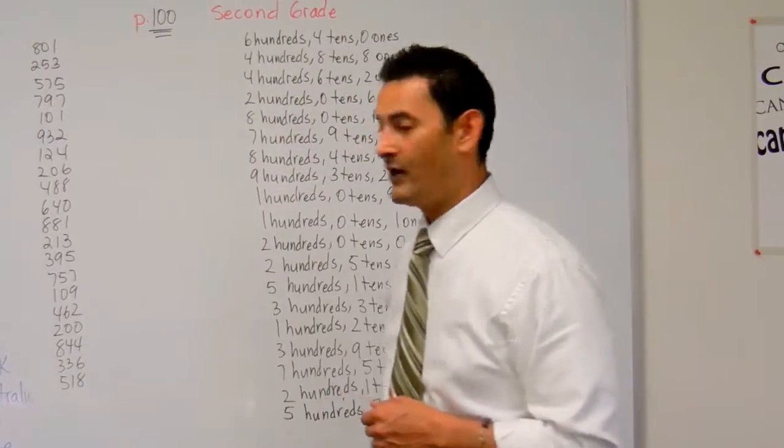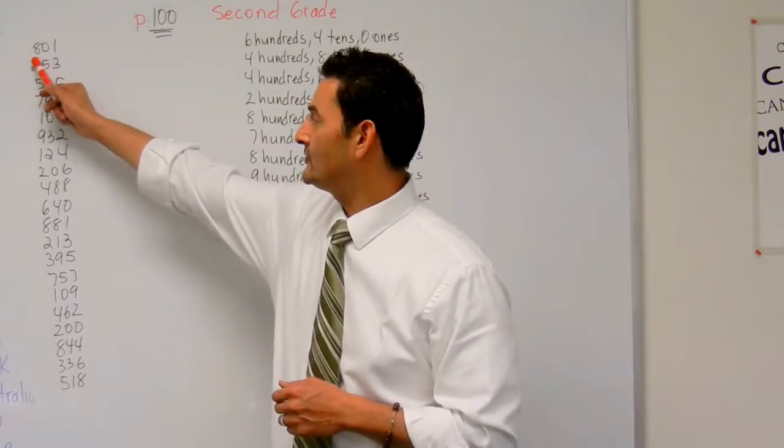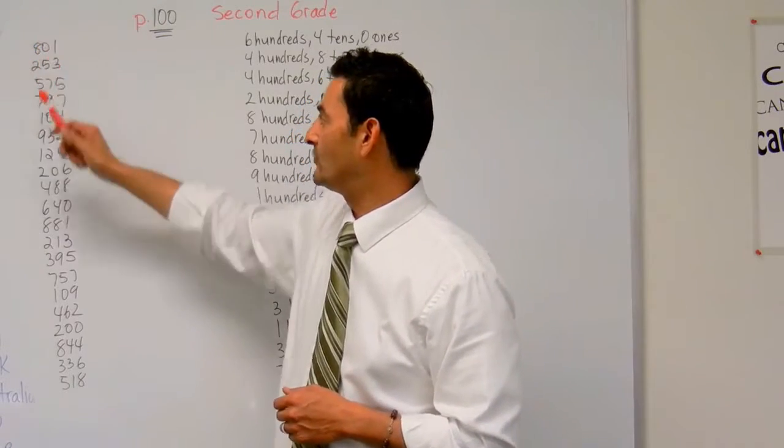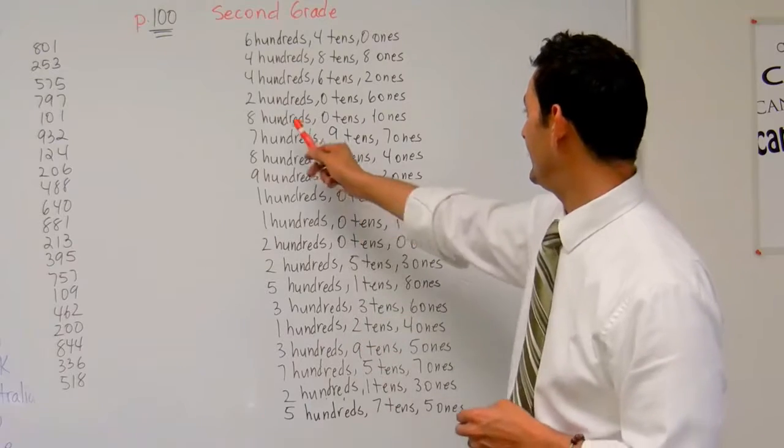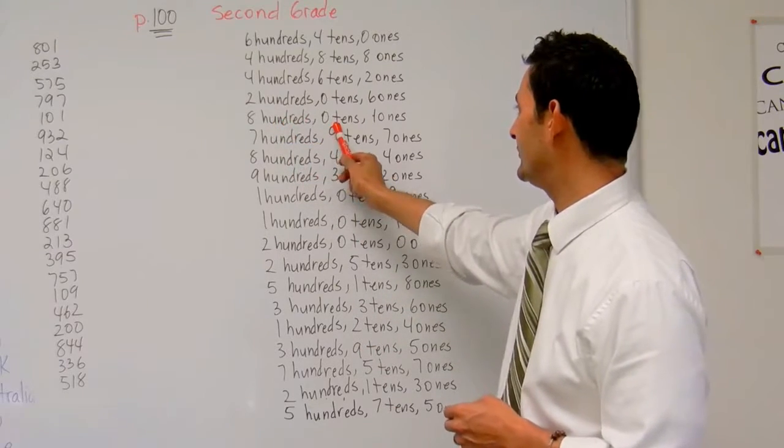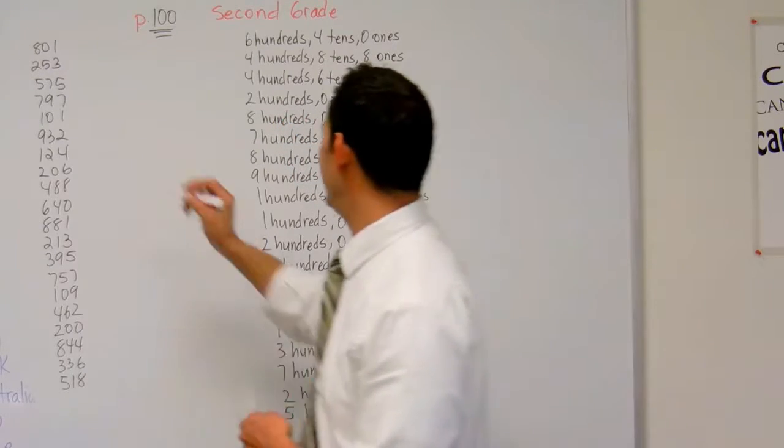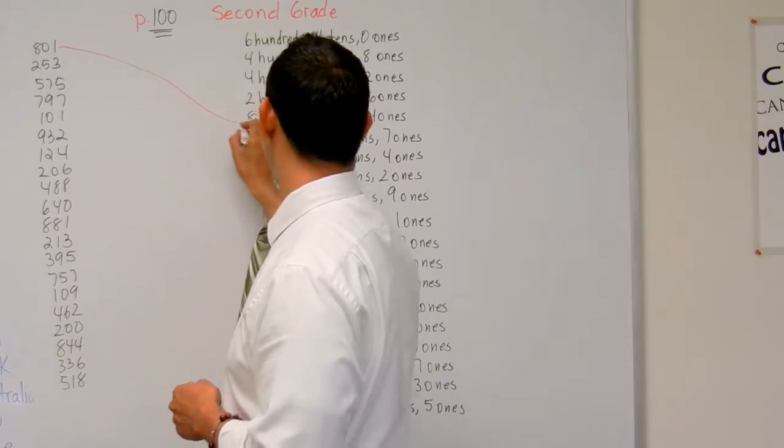So here I have 801. So here I have 800s, zero tens, and one one. Now I need to find it here. 800s. Oh, there's the first 800s, zero tens, one ones. That's it. I'm just going to go ahead and match it right there.